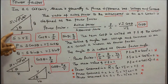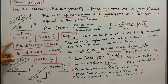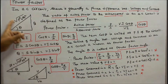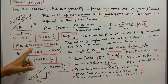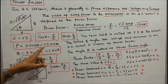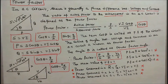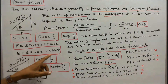This is the power triangle. S is apparent power, P is real power, and Q is reactive power. Apparent power S equals V times I. Here, cos theta equals P divided by S, and sin theta equals Q divided by S. Therefore, real power P equals V times I times cos theta, and reactive power Q equals S times sin theta, which equals V times I times sin theta.